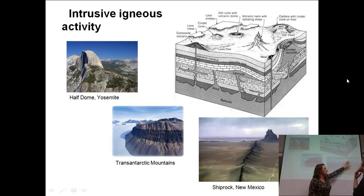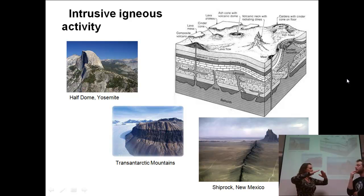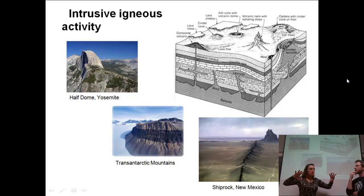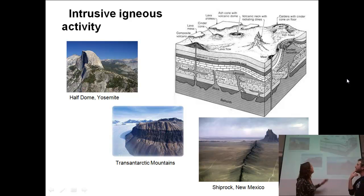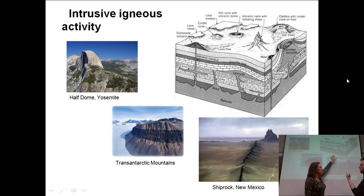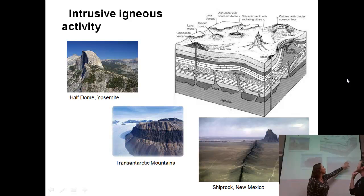The other feature at Shiprock is the volcanic neck. If we think about the cone of a volcano, inside the cone is the pipe that lava actually comes up through and leaves the crater. When the volcanic structure erodes away, it leaves behind the material that was in that pipe — the pipe is the last thing standing. Everything else is eroded away, leaving this towering feature: the volcanic neck. So we have Half Dome as part of the batholith, the sill, the dike (discordant), and the volcanic neck.